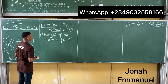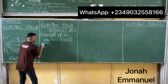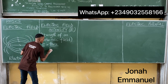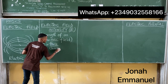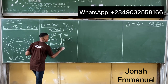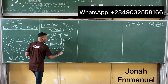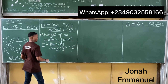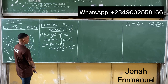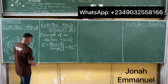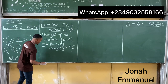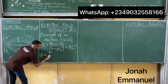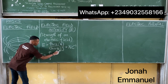In mathematical form, we say E is equal to force over charge. Force is in Newtons, charge is in Coulombs. So the electric field intensity is measured in Newtons per Coulomb. In a broader view, we say E is equal to F over Q, measured in Newtons per Coulomb.